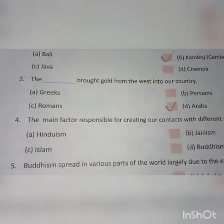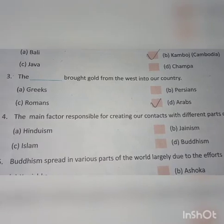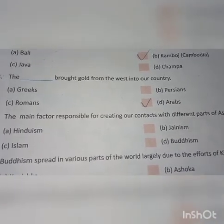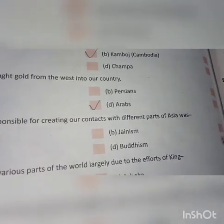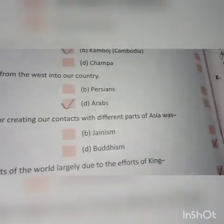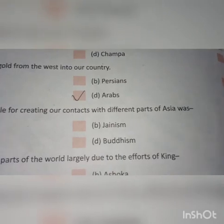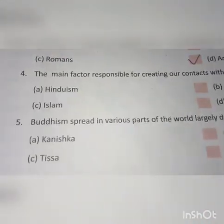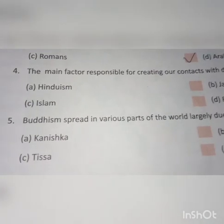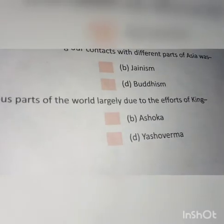Question number four: The main factor responsible for creating our contact with different parts of Asia was — the right answer is D — Buddhism. Buddhism is the right answer. Question number five: Buddhism spread in various parts of the world largely due to the efforts of which king?